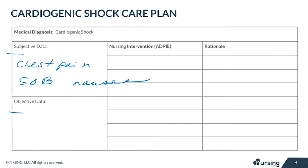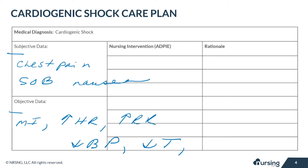Objective data includes evidence of an MI, increased heart rate, increased respiratory rate, decreased blood pressure, decreased oxygen saturation, decreased temperature, increased central venous pressure, and decreased cardiac output. Your patient's heart sounds may be muffled. They may have decreased urine output, crackles in the lungs, a rapid thready pulse, and they may be diaphoretic with cold, pale, possibly mottled skin.